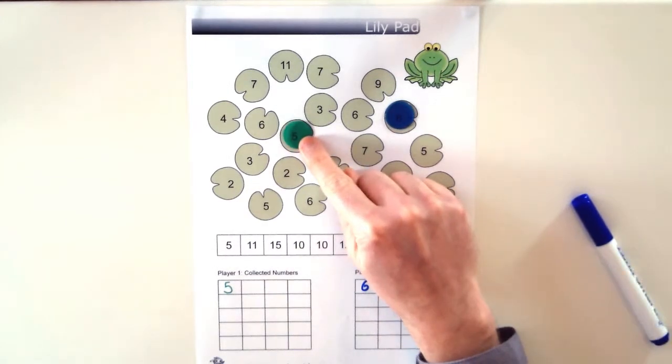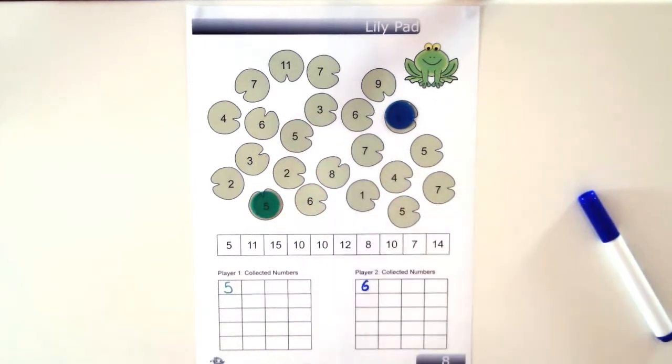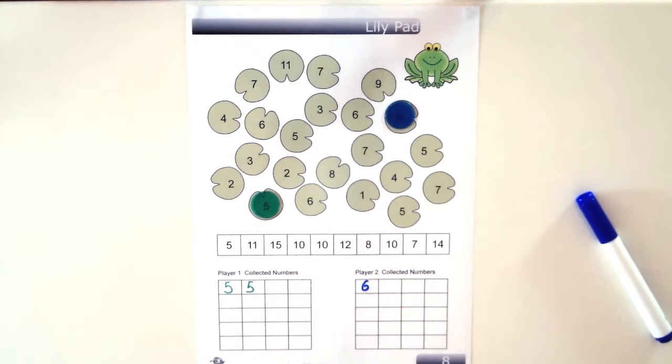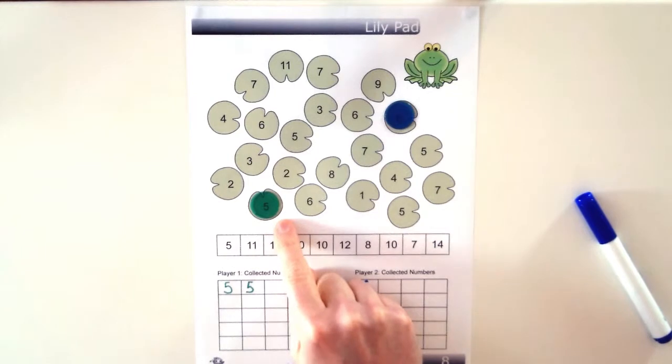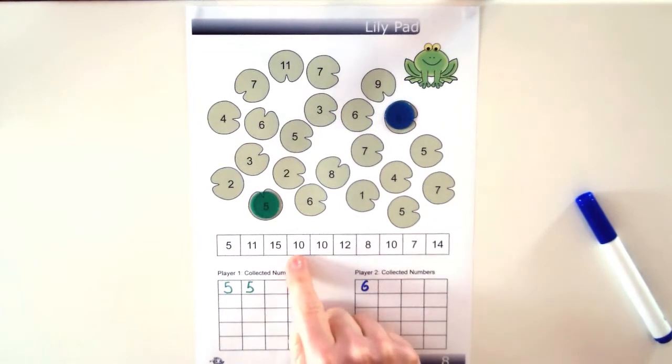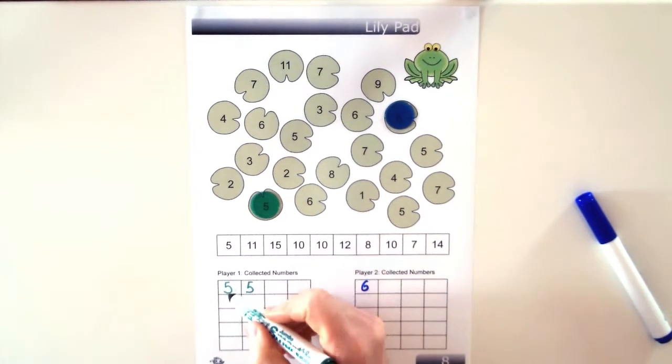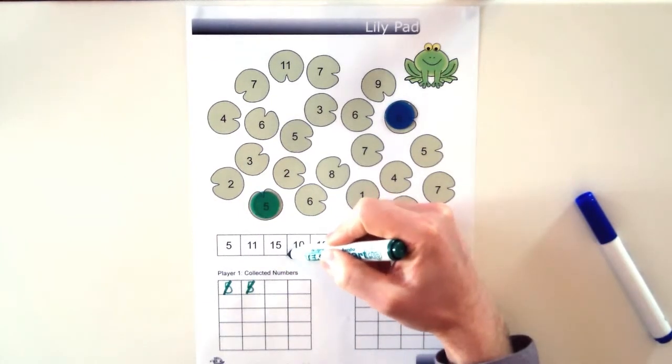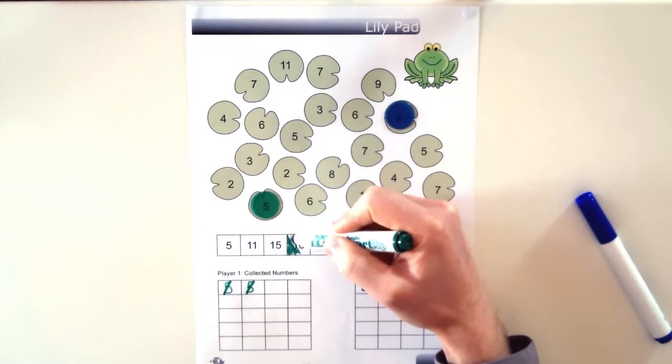Now green is going to move 2 spaces, 1, 2 to land on the 5. Green specifically landed on another 5 because they can now use their collected numbers to add them together and equal the number 10 which is a target number. So they go 5 plus 5 equals 10. Because they've used these collected numbers they cross them out and they can't be used again. And they've equaled the target number 10 so they color it in using their color.